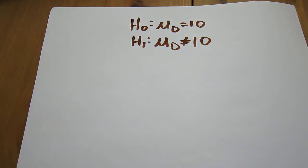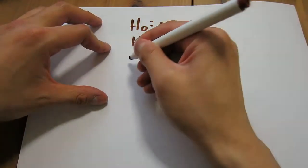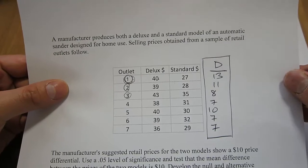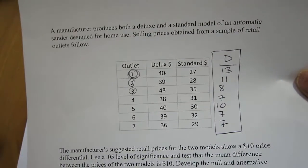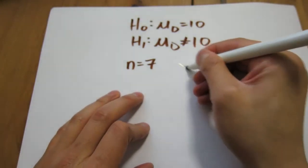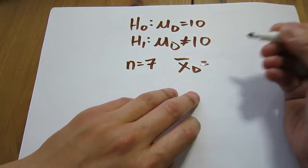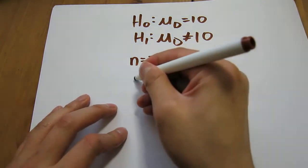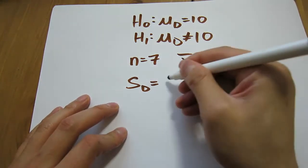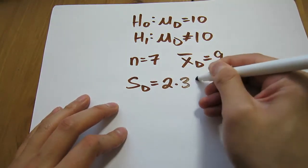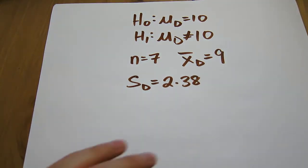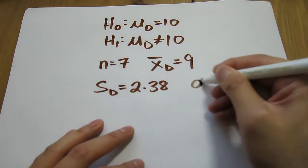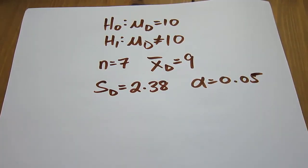We need to write down everything we know. n equals 7 — that's the sample size, since we have 7 shops or outlets. We calculate the average for d, and if you punch that into your calculator, you'll find that the average for d equals 9. The standard deviation for d, if you punch that into your calculator, is 2.38. They also ask us to test at the 5% significance level, so alpha is 5%.